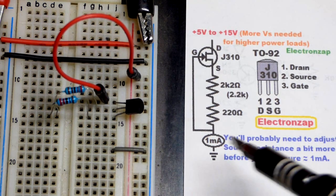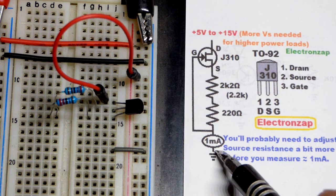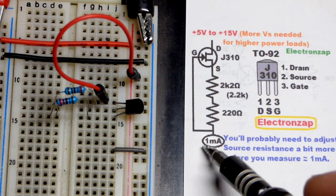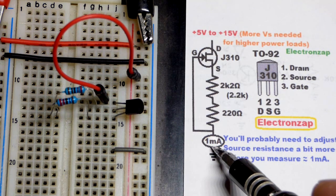So now in a number of videos, I'm going to want 1 milliamp of current for one reason or another. And so we want a 1 milliamp current source for those circuits.